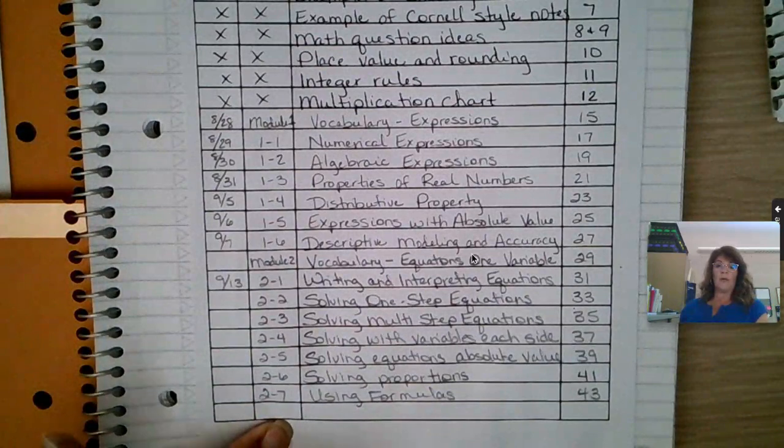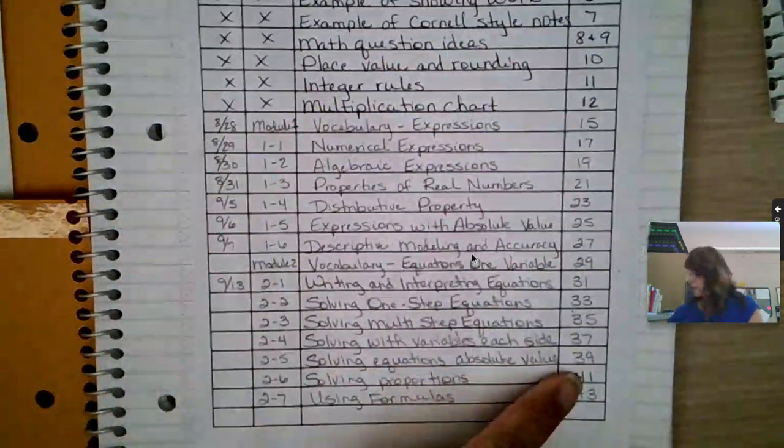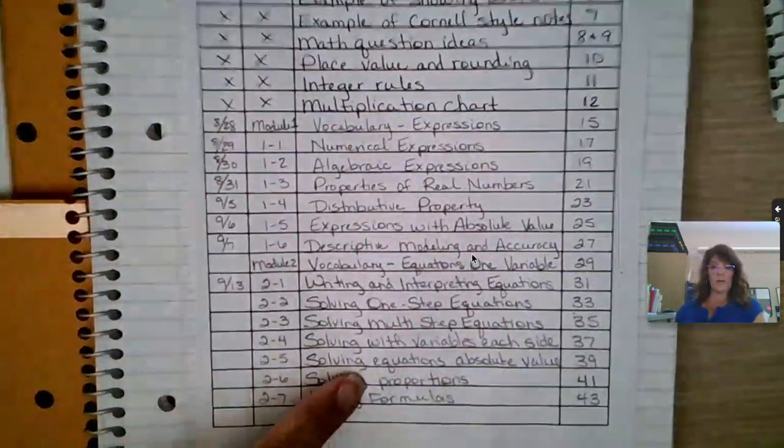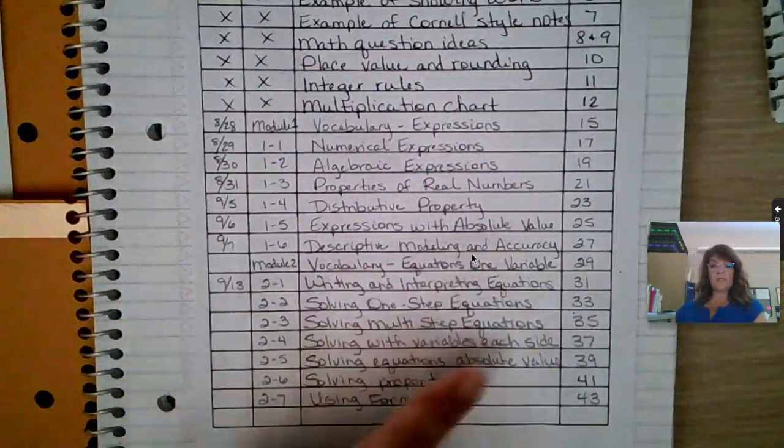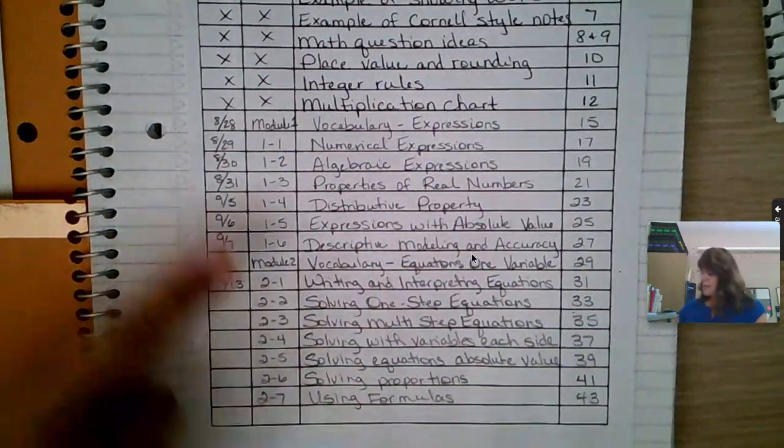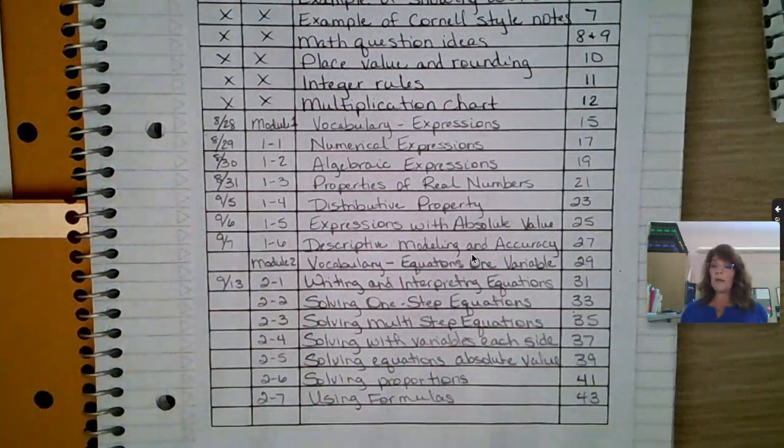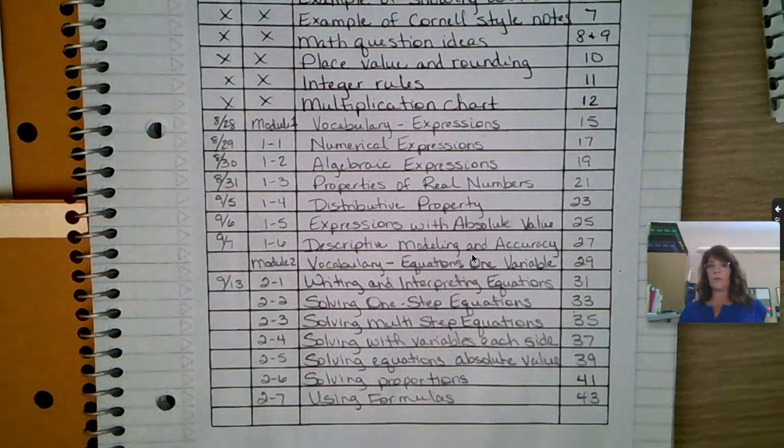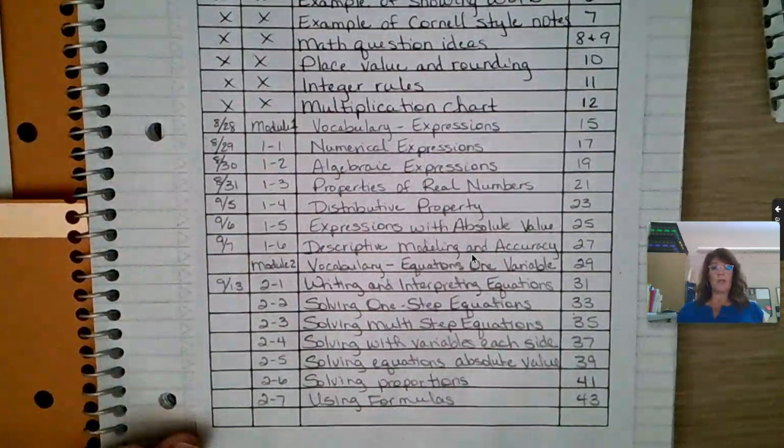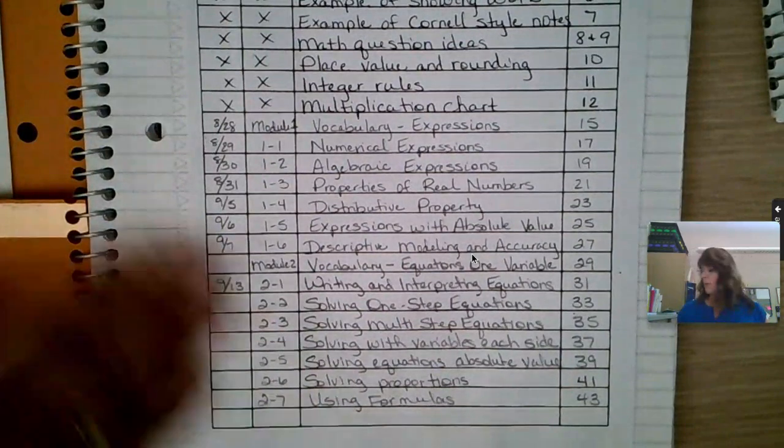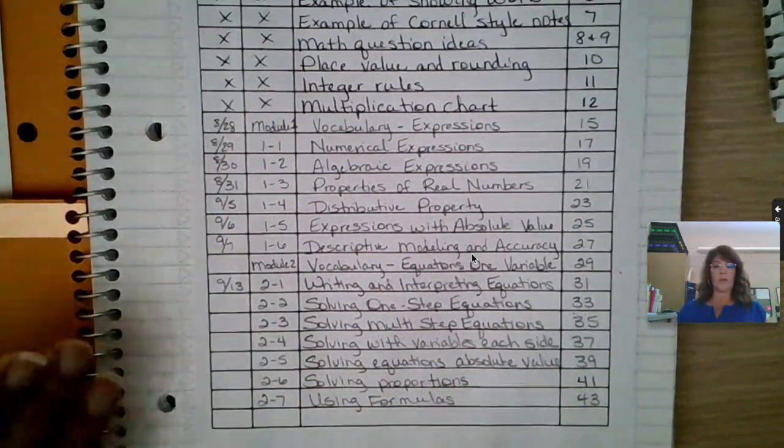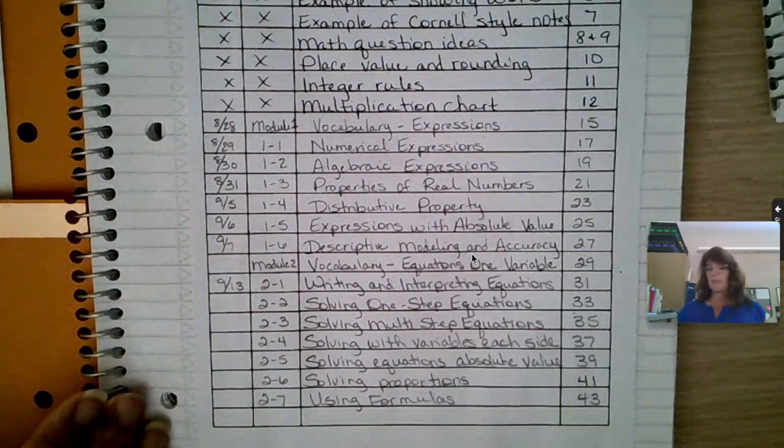Notice my pages are numbered. I've written down the titles of the lessons, and as I go, I try to fill in the dates. If I get behind, I look on Schoology, figure out what date we did things, and fill it in. When we do a notebook check, this will be checked. Before we do a notebook check, I will post up a copy of a current table of contents.